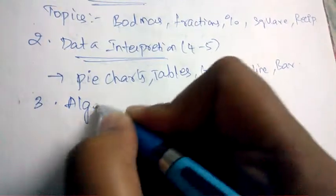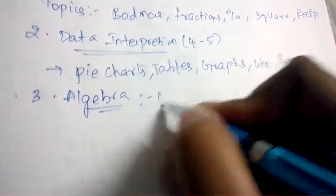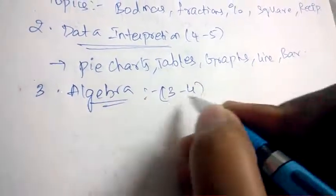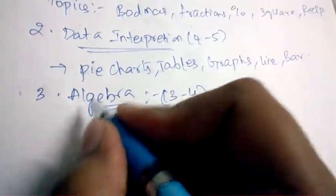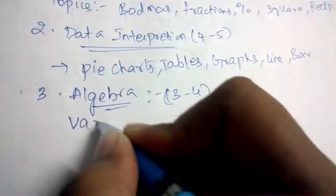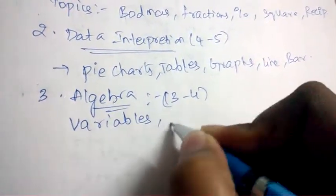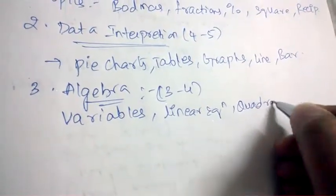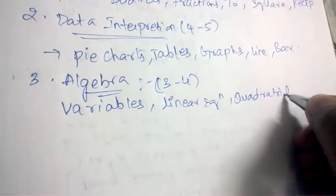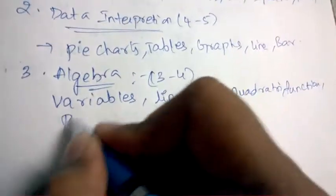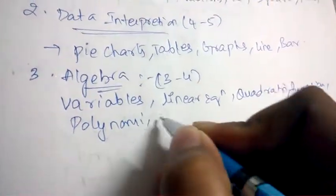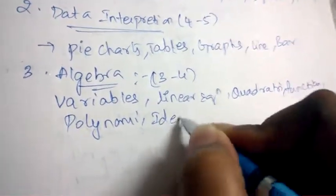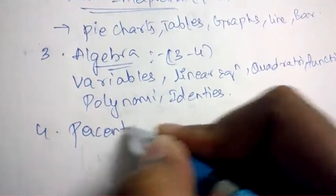The next topic is Algebra — the weightage is 3 to 4 questions. The topics covered are variables, linear equations, quadratic equations, functions, polynomials, and identities.